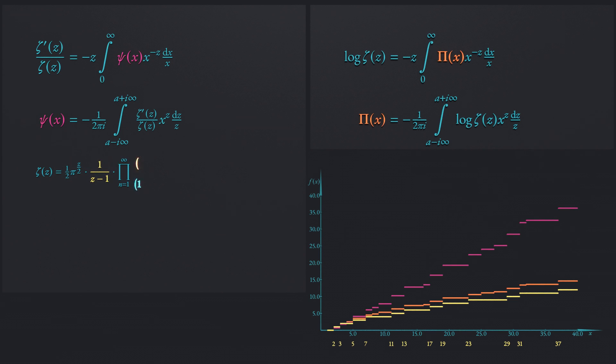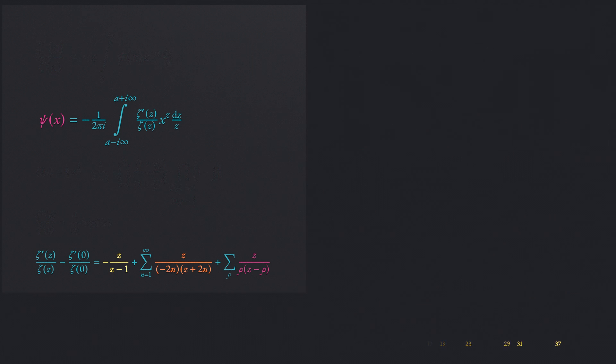The product representation of the zeta function turns out to be the representation of choice. The logarithm turns the infinite product into a sum with infinitely many terms. The resulting expression can be differentiated rather straightforwardly. The result simplifies enormously when its value at zero is removed. One ends up with three contributions. One from the pole, one from the trivial and one from the non-trivial zeros of the zeta function.